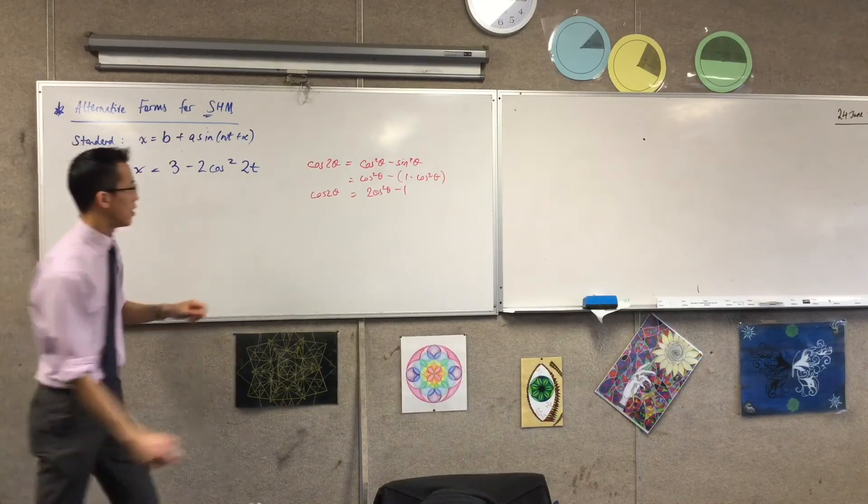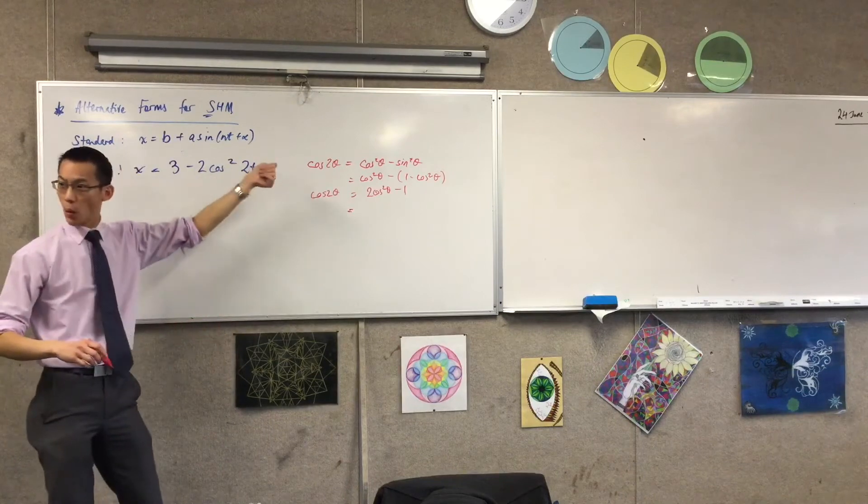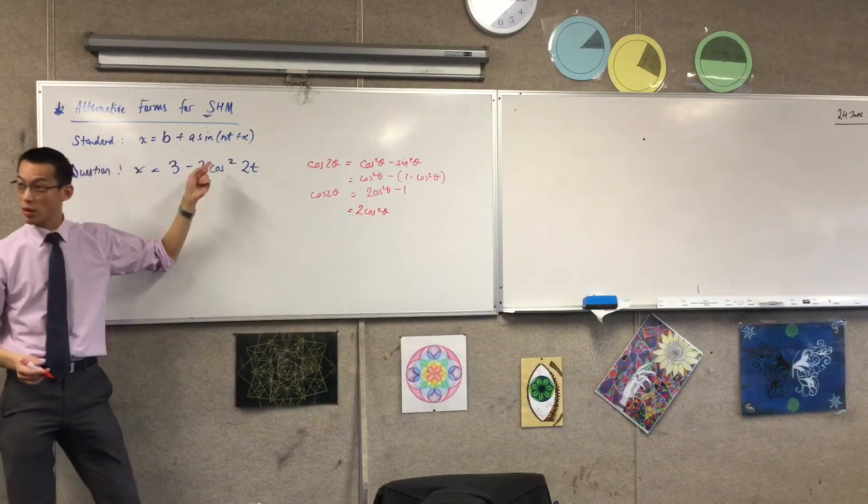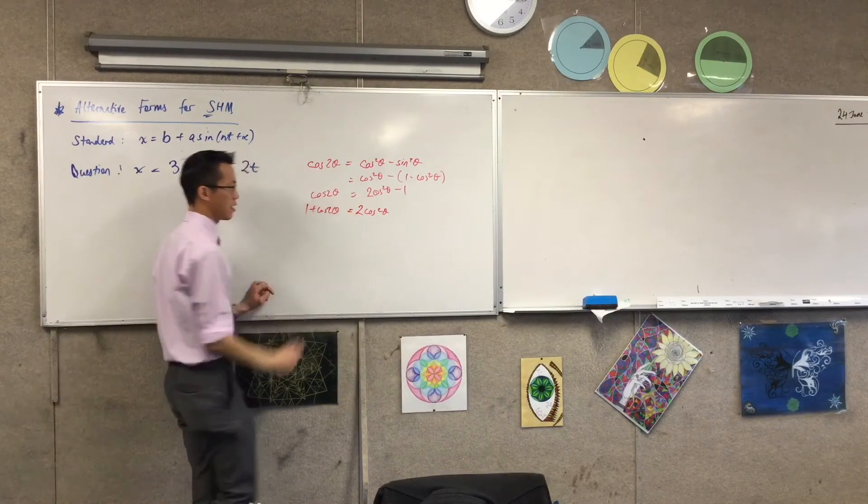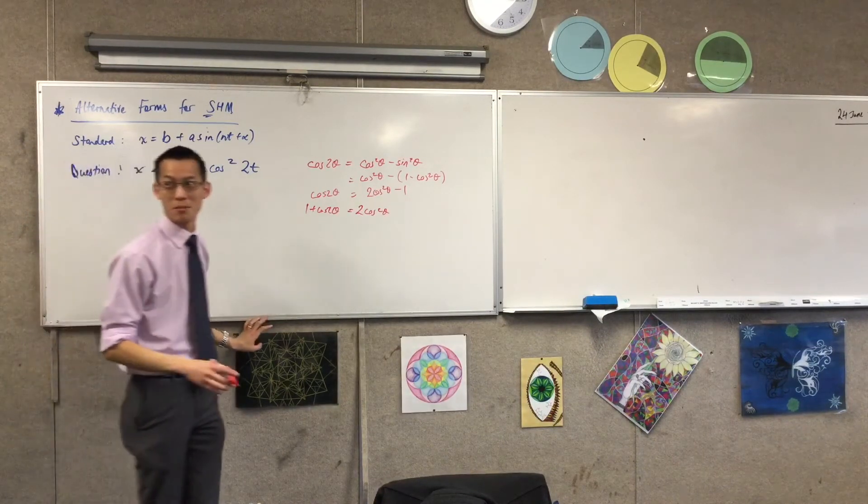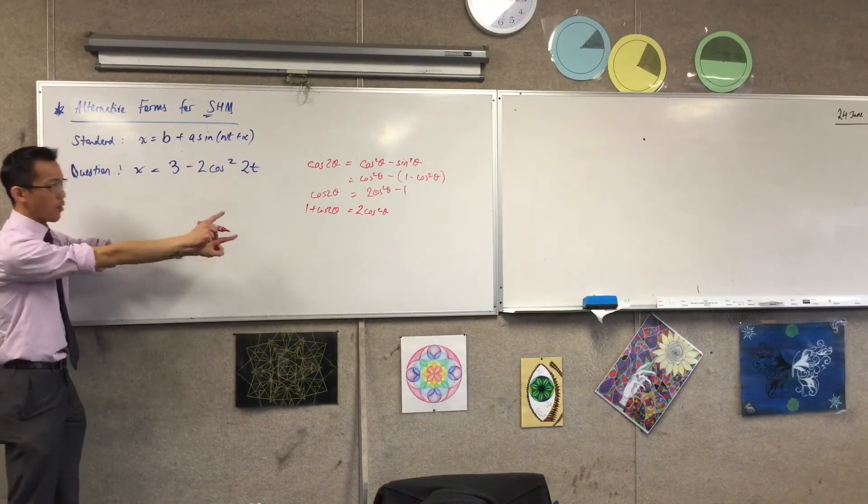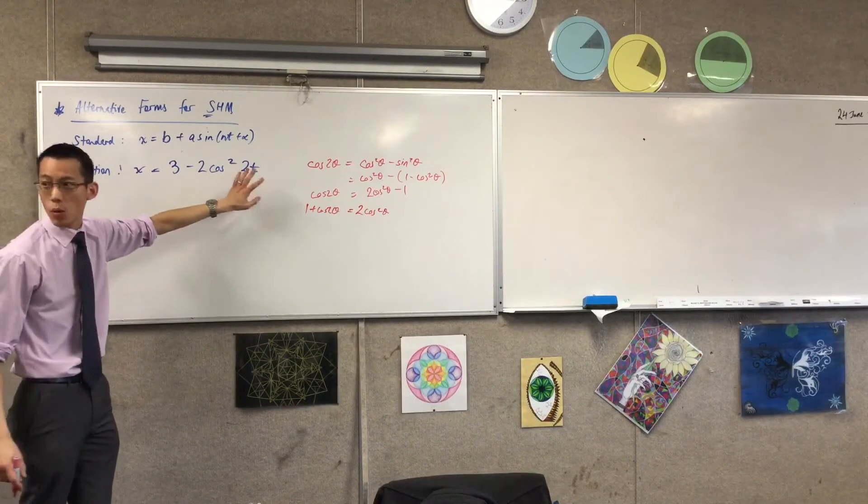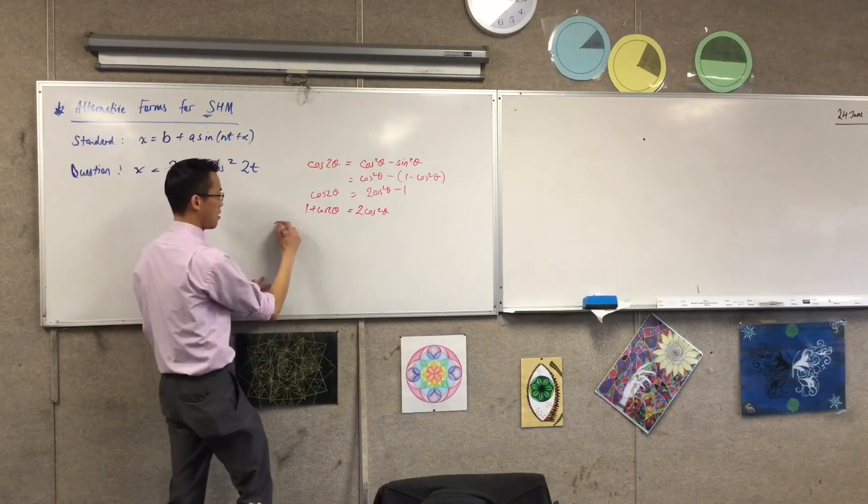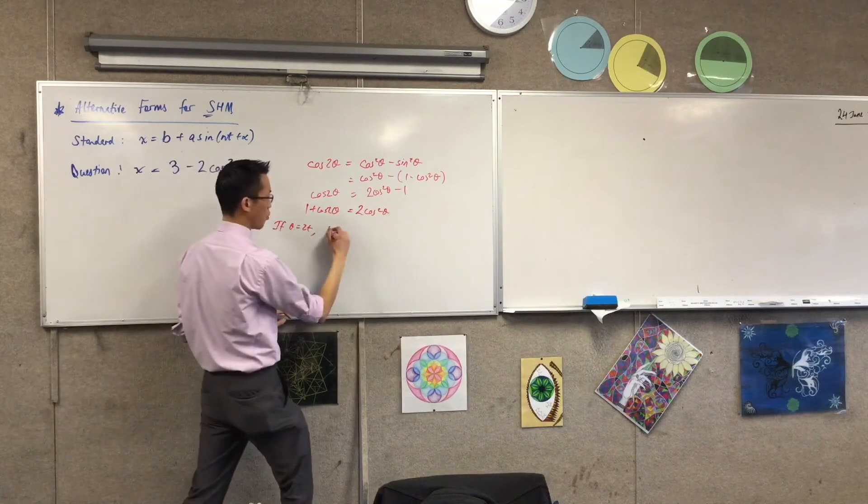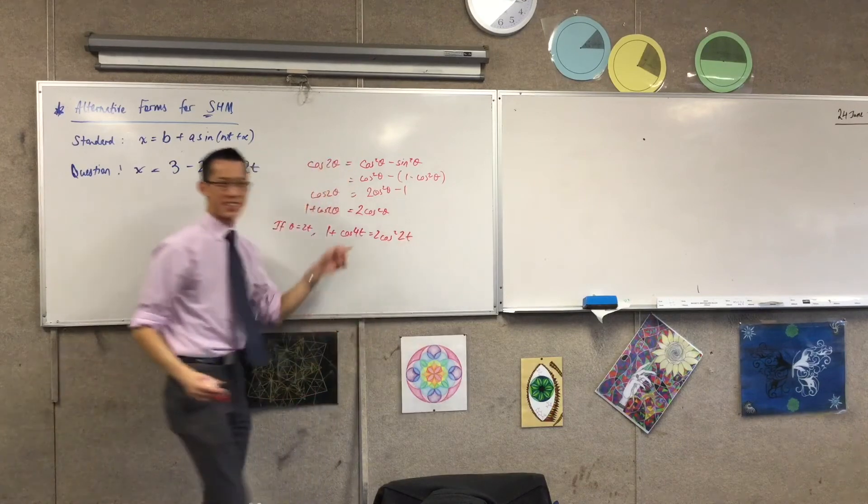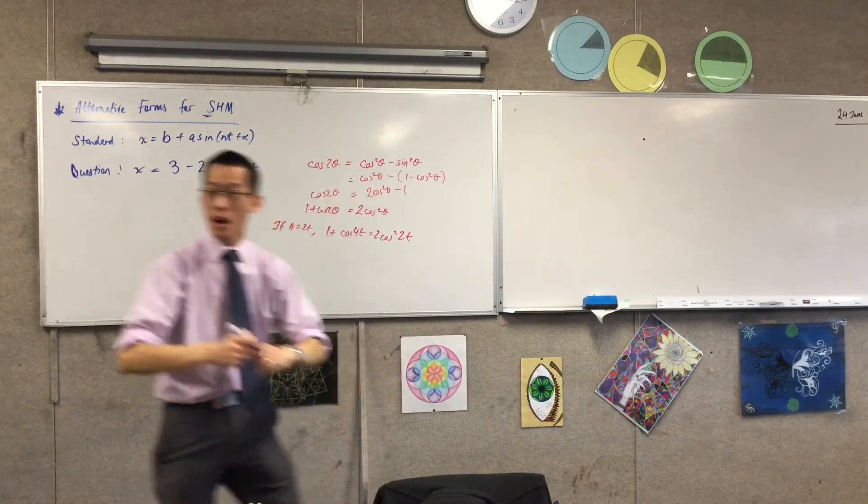How am I going to use that here? What am I going to do to this? I've got some number of cos squareds over here, so the first thing I'm going to do is make cos squared the subject of this. I don't mind leaving it as 2 cos squared, because in fact, I have 2 cos squared here, but I will put that 1 plus cos 2θ over there. Does that make sense? At this point, I don't want to get confused between this double angle and that double angle, so I'm just going to say, if θ equals 2t.